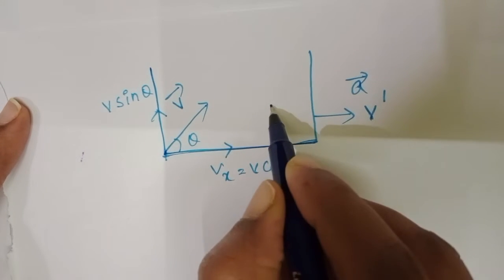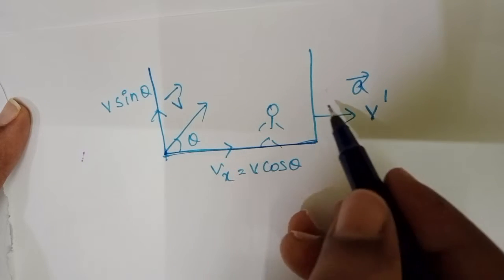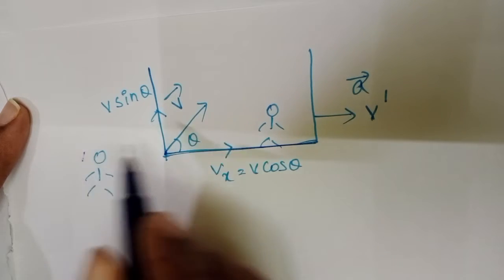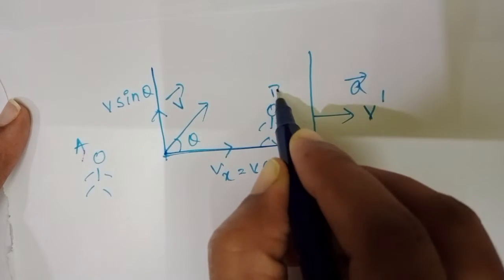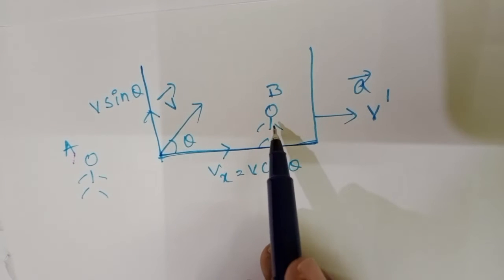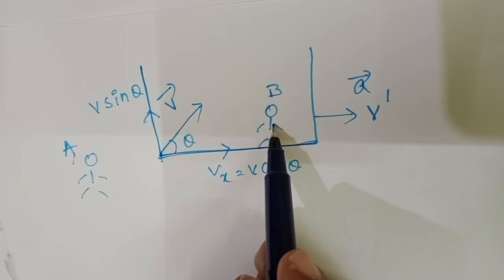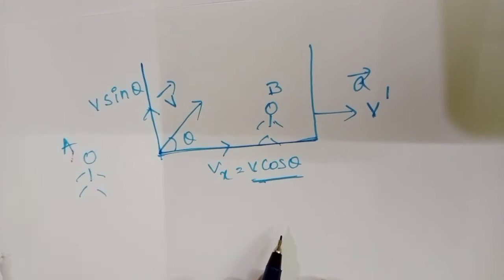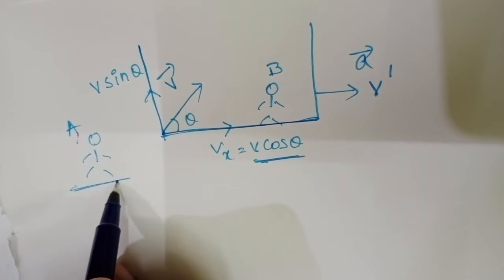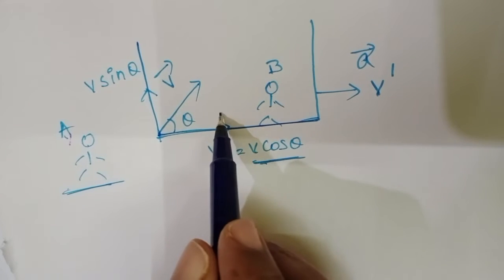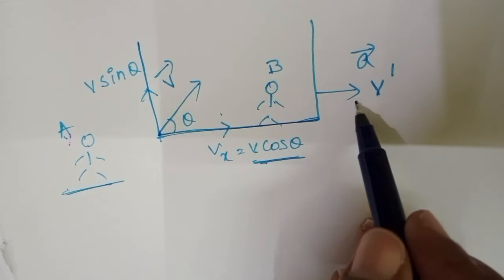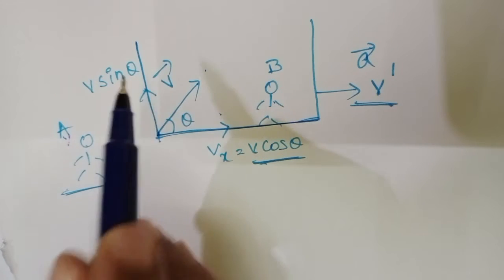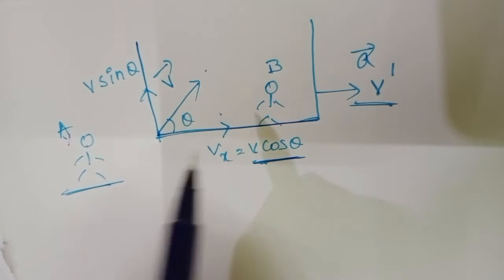Consider a person A standing inside the trolley and person B standing outside the trolley. Relative to the trolley — that means relative to person B — the horizontal component of the velocity is only v cos theta. But relative to person A, the trolley is moving with a certain horizontal velocity, and at the same time the particle possesses the horizontal component v cos theta.